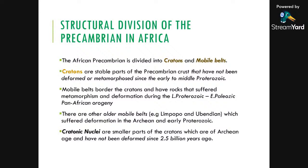The mobile belts are Precambrian rocks that suffered metamorphism and deformation during the late Proterozoic to early Paleozoic Pan-African orogeny. When we say mobile belts in the African context, we are referring to the orogenic belts that formed during the Pan-African orogeny. There were other orogenies on the African continent which created mobile belts — for example, the Limpopo, Eburnean, and Birimian — and we'll talk about many of them as we go on.